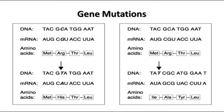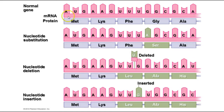The same kind of thing would happen with a deletion — if you deleted one base, it would shift everything in the other direction. The substitution can change one or a couple of amino acids in the chain, but a deletion or insertion is going to change everything from that point on, because it shifts the way the whole DNA sequence is read. Here's another example: the normal gene codes for methionine, lysine, phenylalanine, glycine, and alanine. When we substitute an adenine for a guanine, it changes just one amino acid to serine, and may or may not have much effect on the protein.